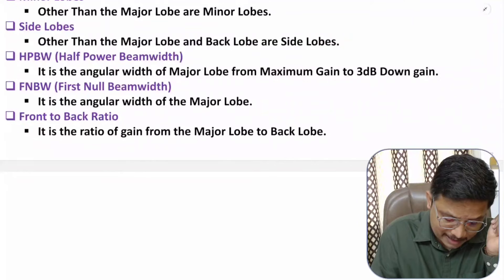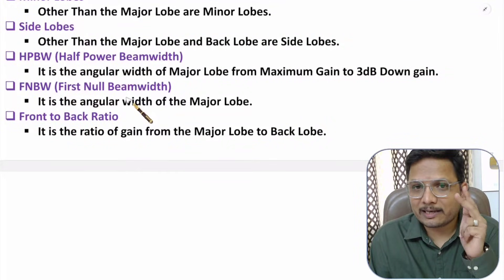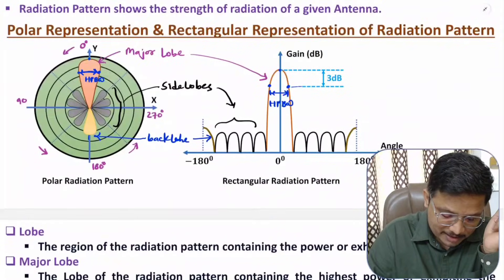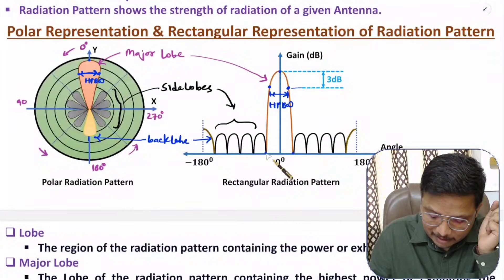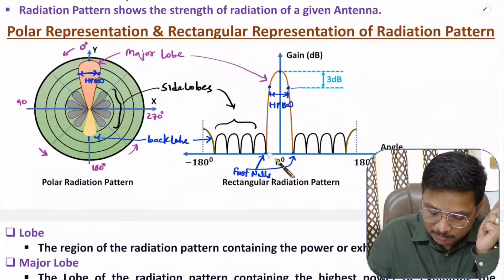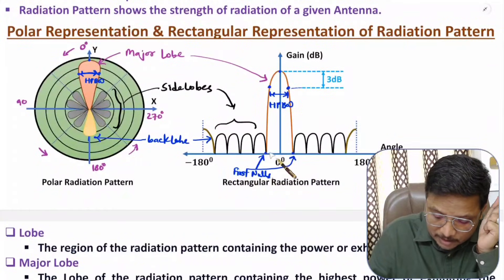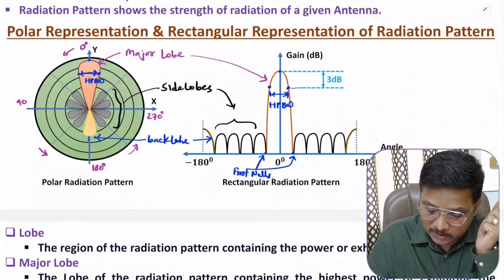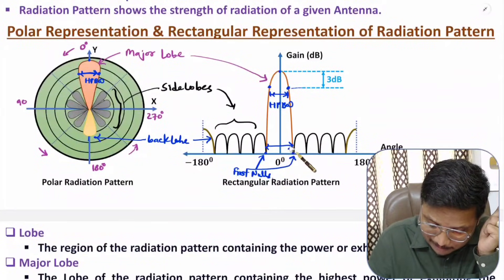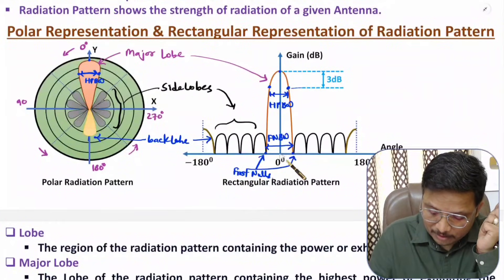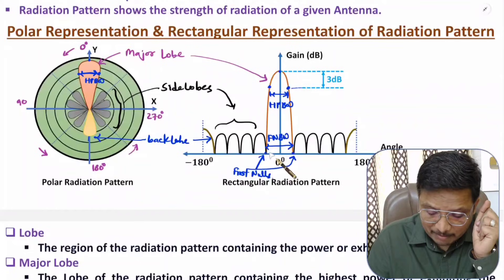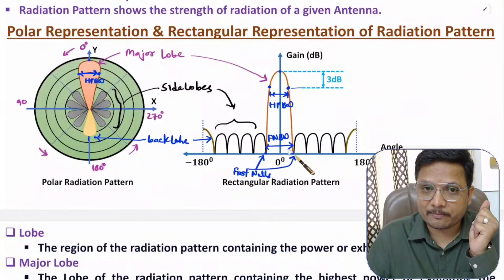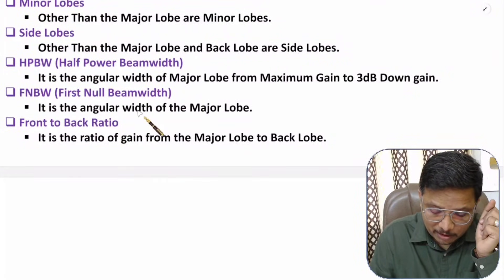The next definition is First Null Beam Width (FNBW). The major lobe has first nulls — these are the first minima on either side of the major lobe. In rectangular representation, the first nulls appear at the edges of the major lobe. The angular width of the major lobe measured between these first nulls is the First Null Beam Width. So FNBW is the angular width of the major lobe defined by its first nulls.